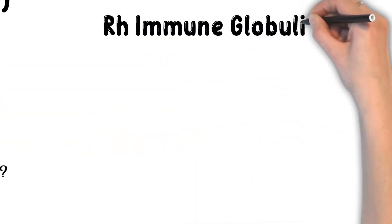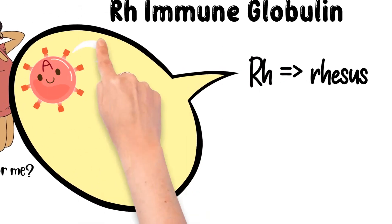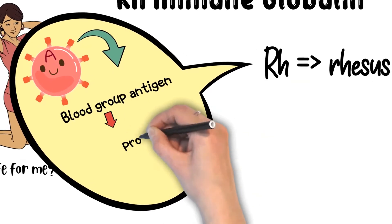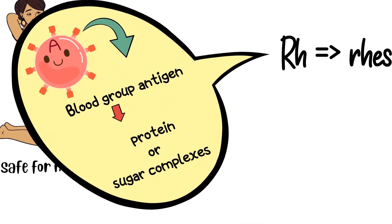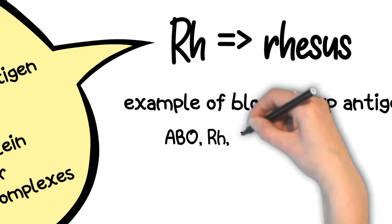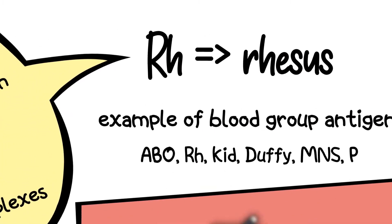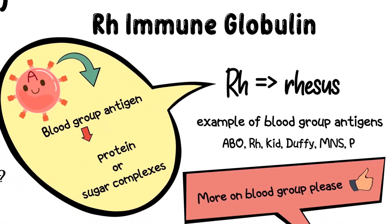What is RHIG? RH is the abbreviation for Rhesus, which is a name for one of many blood group antigens on the red blood cell. Antigens are red blood cell surface molecules which can either be proteins or sugar complexes. The most well-known blood group antigen is ABO blood group.